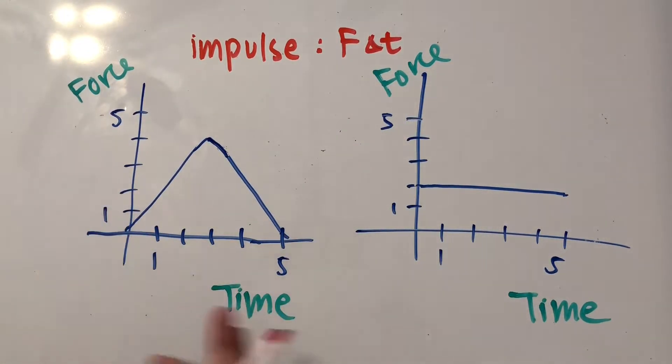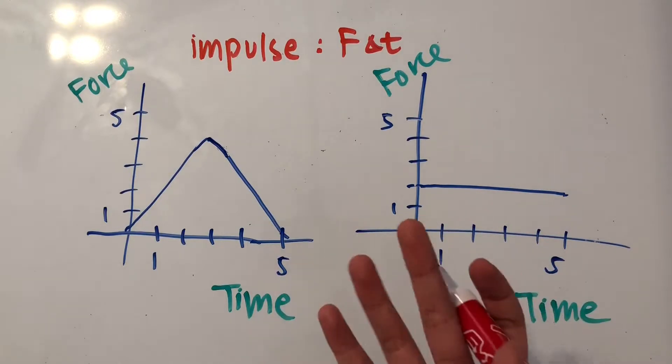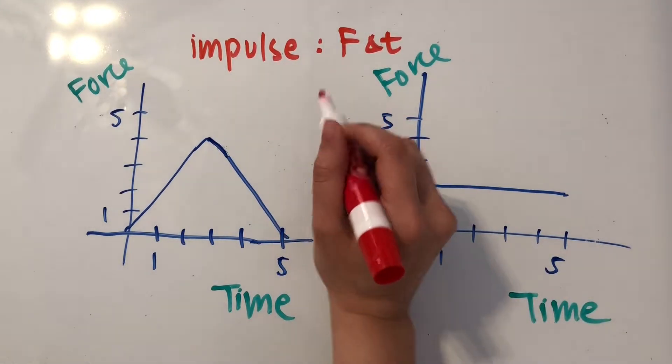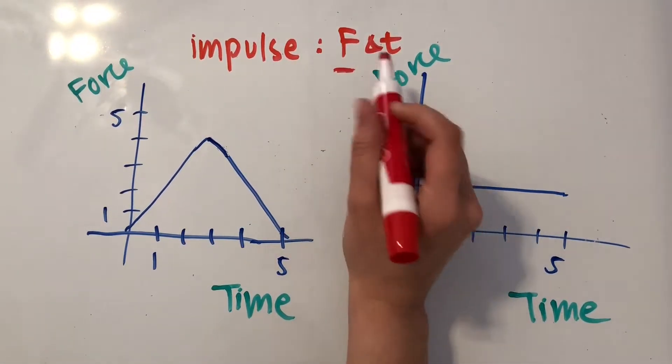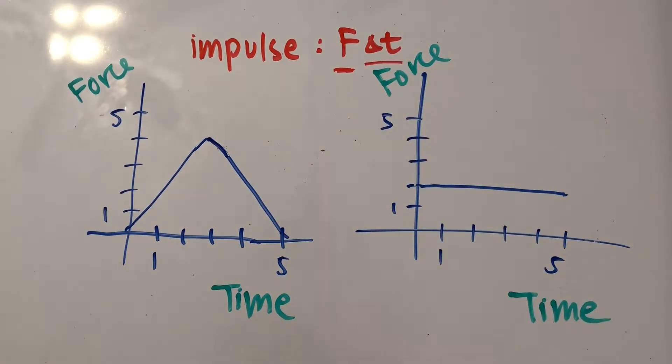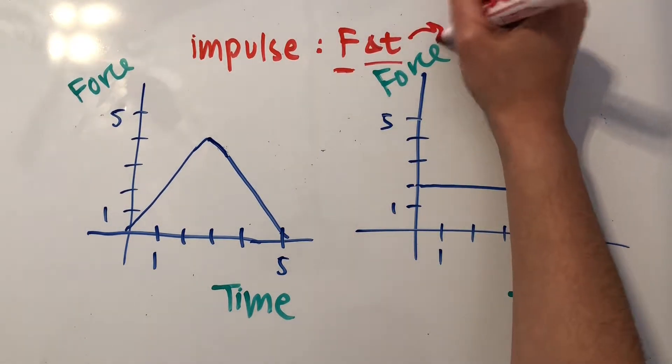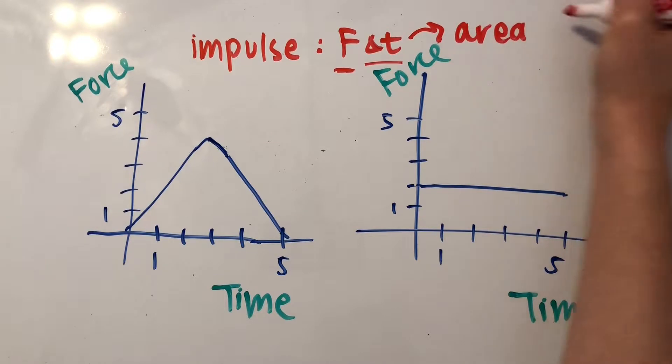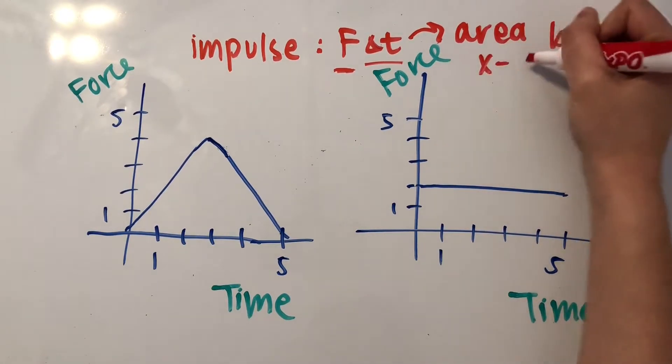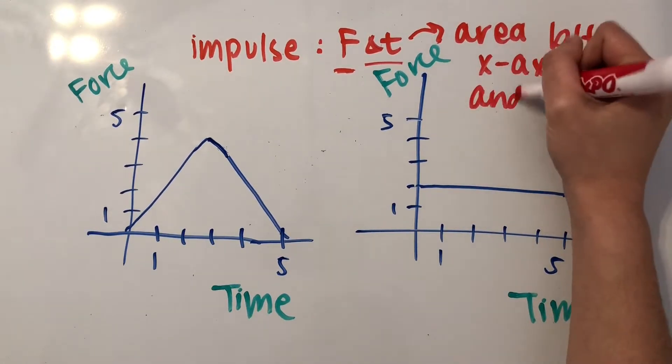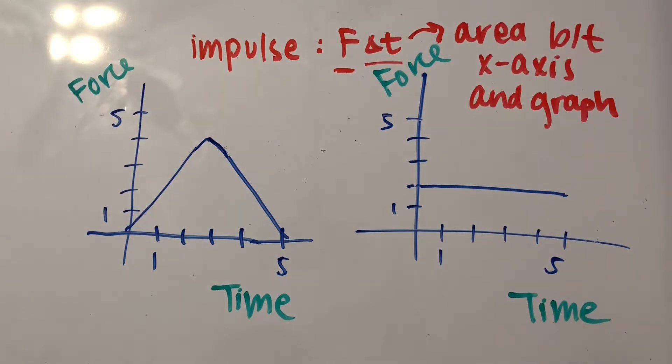So when you look at these two force versus time graphs, we can find the impulse of both of them by simply multiplying the force over the amount of time, which basically translates into the area between the x-axis and the graph. And so what do I mean by that?